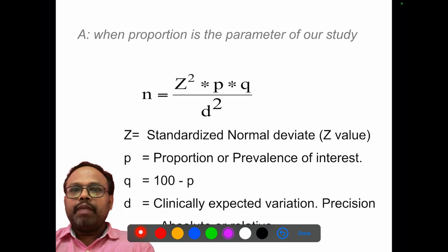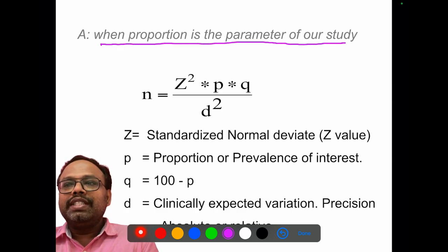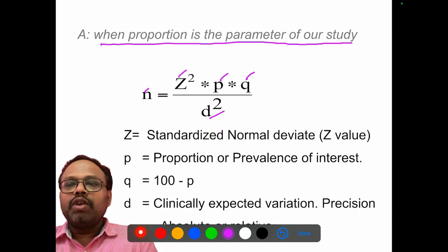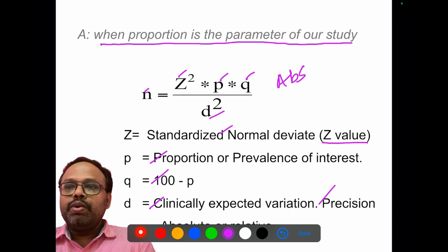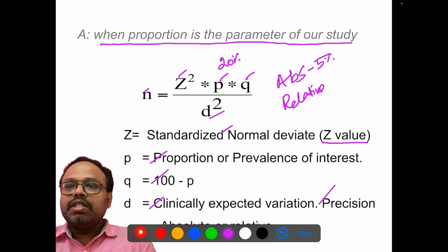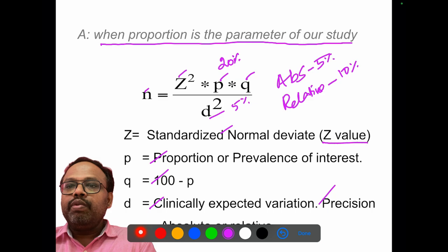The formula for calculating sample size when dealing with proportion (estimation of proportion or prevalence) is: N = Z² × P × Q / D². Z is the standard normal deviate (z-value). P is the proportion or prevalence of interest. Q is 100 minus P. D is the clinically expected variation, or precision — the allowable error. This allowable error can be either absolute or relative. For example, if prevalence is 20% and absolute precision is 5%, we substitute 5%. If relative precision is 10%, then it is 10% of 20%, giving 2%, which we substitute in place of D.